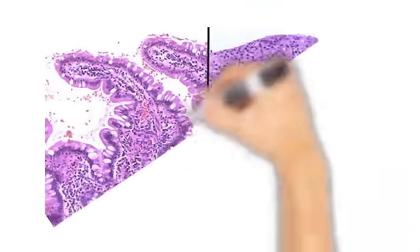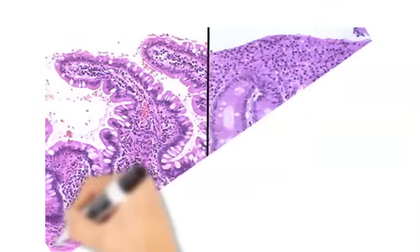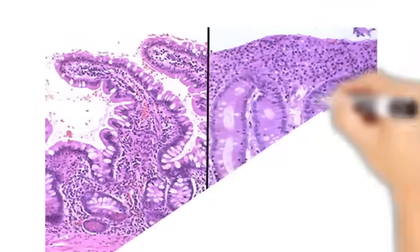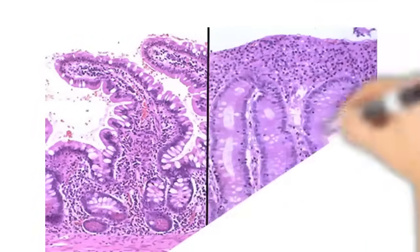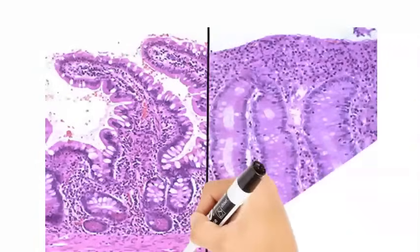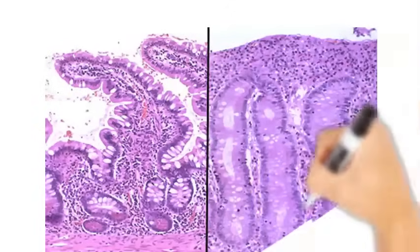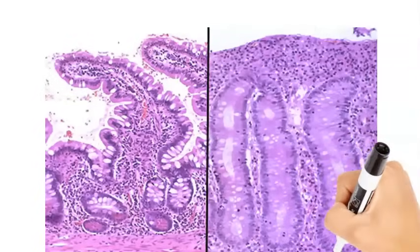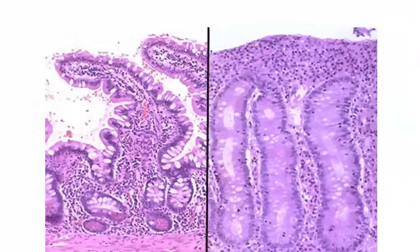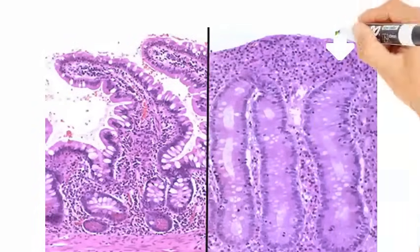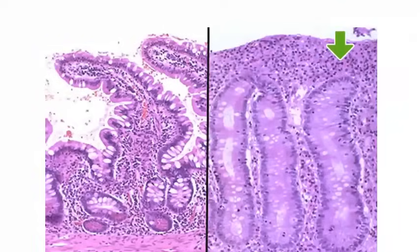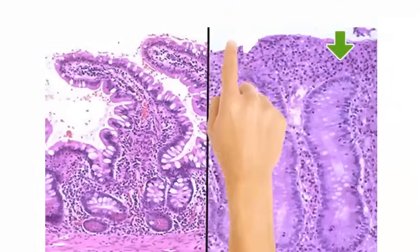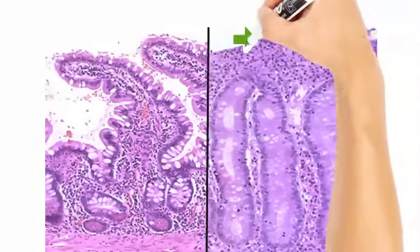In this image, the left shows normal villi and crypts intact. On the right side, the villi are completely lost and there is dense lymphocytic and lymphoplasmacytic infiltration. This arrow depicts a dense inflammatory infiltrate, and this arrow represents the loss of villi.